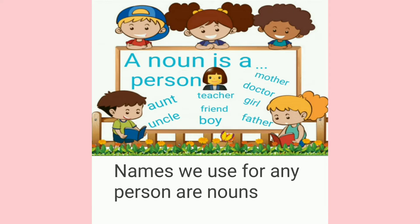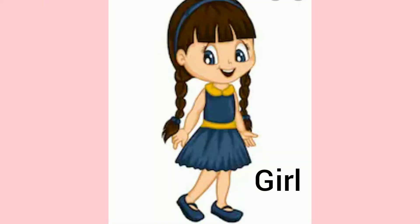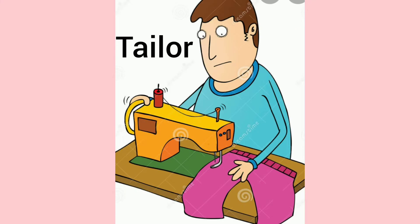Nouns are names we use for any persons, like a teacher, mother, doctor, etc. A person who teaches we call a teacher — so teacher is a name given to a person who teaches us, and so teacher is a noun. Girl is a name we give to a female child, so girl is a noun. Tailor is a name we give to a person who tailors clothes, so tailor is a noun.